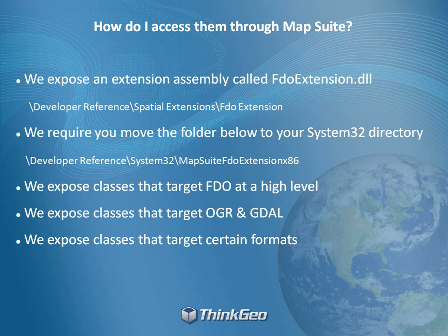What's nice about OGR and GDAL is that their libraries key off the file name — the actual extension — to know what to do. When we call something with FDO, there are four or five different strings we have to pass into the constructor. But in the derived classes for OGR and GDAL, there's only one: basically a path to the file you're looking for, and it figures everything else out. We also have classes that target specific formats — for example, a popular format like TAB has a TAB File Feature Source and TAB File Feature Layer, which is more intuitive to find in IntelliSense.